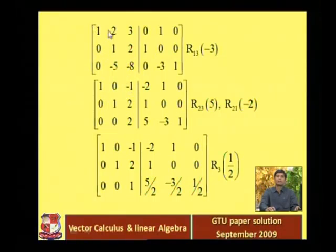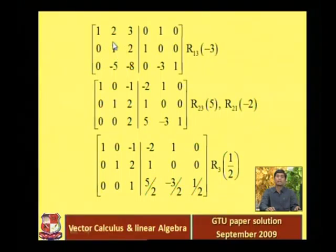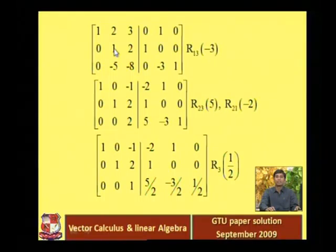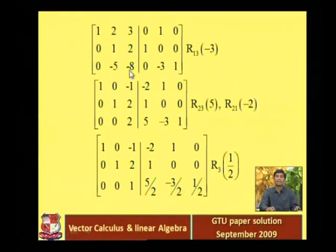Now, below that first leading entry we have zero in the second row. Our second leading entry is already 1. If it were not 1, we would have to make it 1, because to get the identity matrix all diagonal elements must be 1. But here it is already 1, so we proceed to the next process.